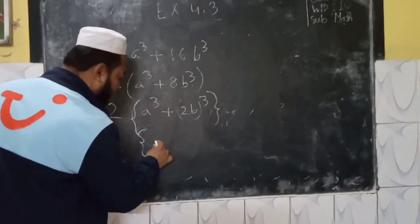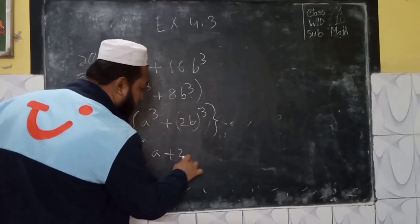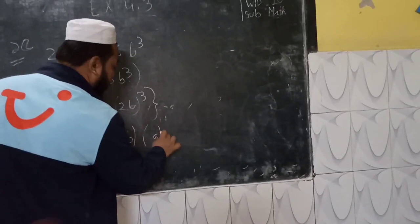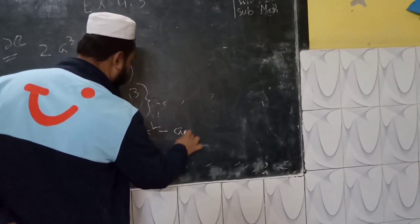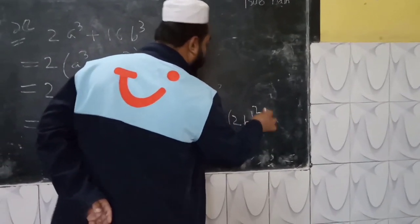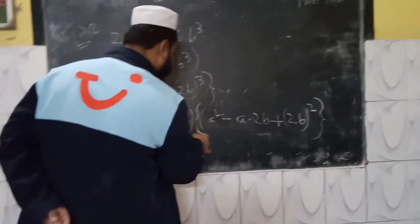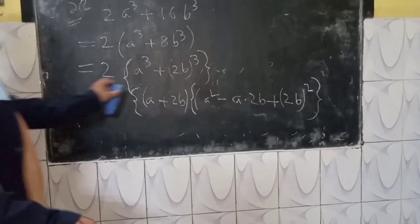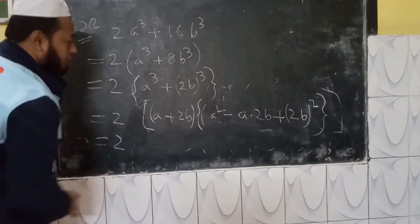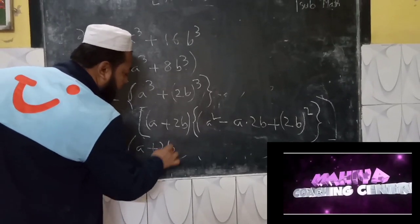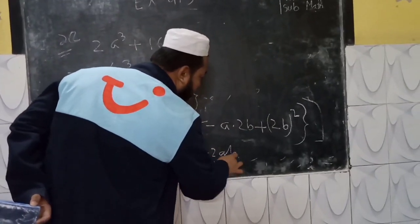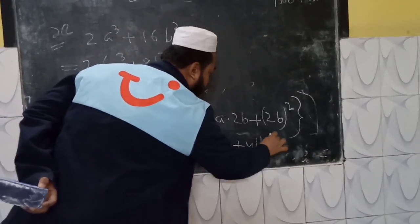A cube plus b cube is the same way. A plus b into a square minus ab plus b square. 2sb. A cube whole square. We will do the second bracket. A plus 2sb. We will do half bracket: A square minus 2ab plus 4b square.